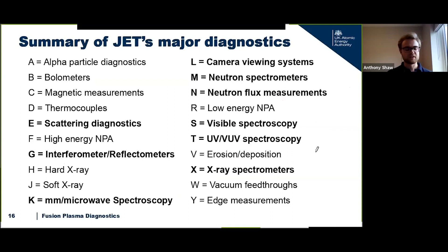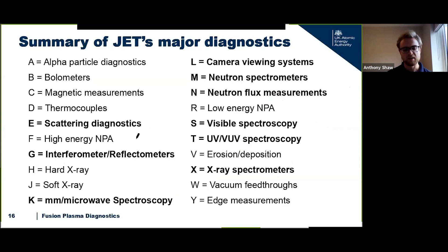There's a large summary of diagnostics used at JET — cameras, spectroscopy, neutral particle analysis, ultraviolet and vacuum ultraviolet spectroscopy, magnetics measurements, and X-ray spectroscopy among many others. The key is that we need all of these diagnostics together to give us a complete picture of the machine. It's not enough to just have one measurement.